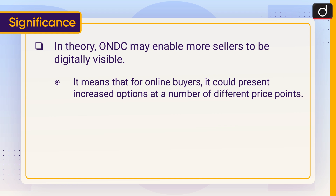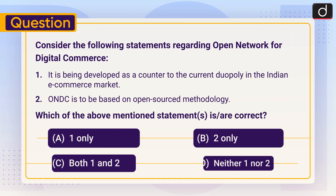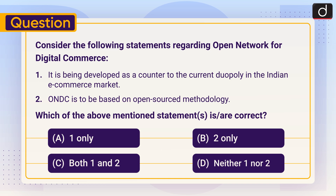Now it's time for the practice question. Consider the following statements regarding Open Network for Digital Commerce: One — it is being developed as a counter to the current duopoly in the Indian e-commerce market. Two — ONDC is to be based on open-sourced methodology. Which of the above statements is or are correct? One only, two only, both one and two, or neither one nor two?